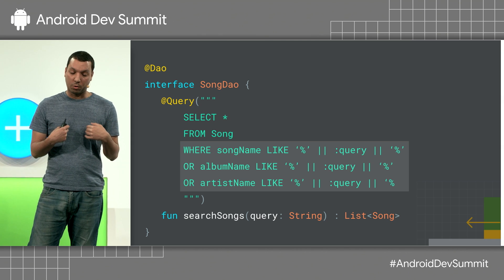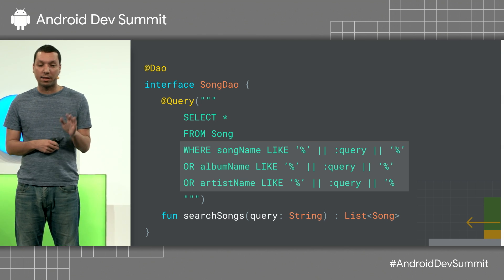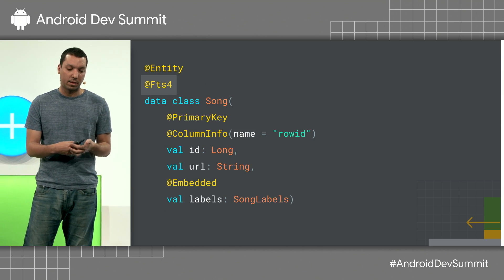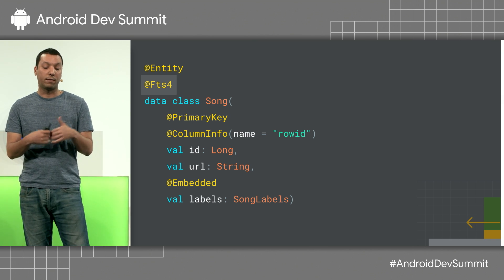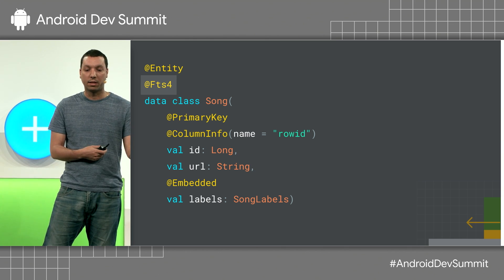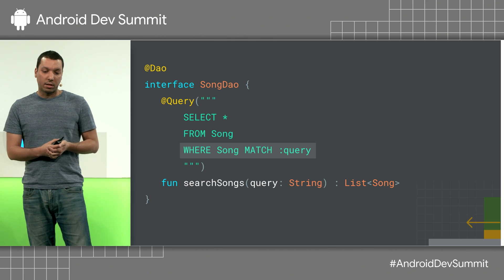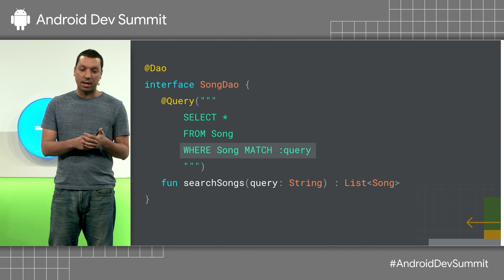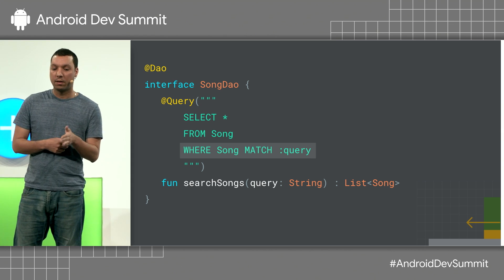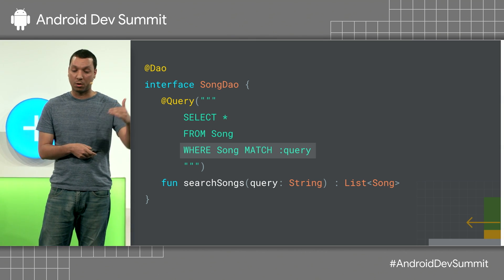Moreover, if you try to search across album and artist, you have to expand this query, and as you can see, it doesn't easily scale. FTS helps us with this situation because it creates a virtual table where all the columns are indexed. To use FTS, you just annotate your entity with @Fts. Now in your query, instead of using LIKE, you use MATCH, and we use the table name in the WHERE statement, which tells the MATCH operator to search across all those labels.